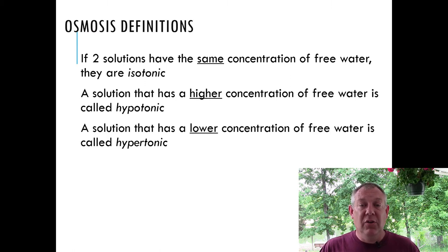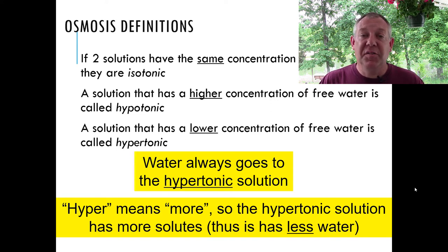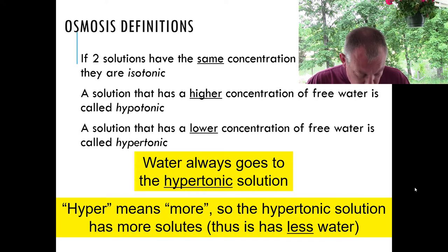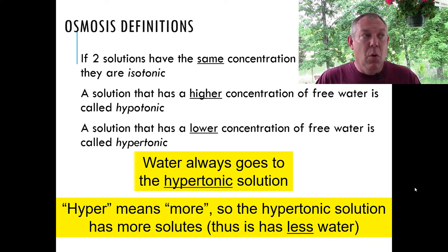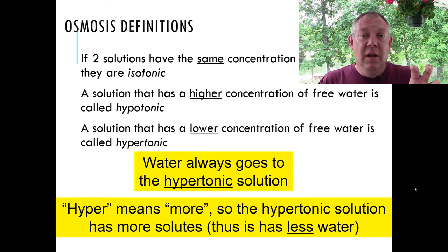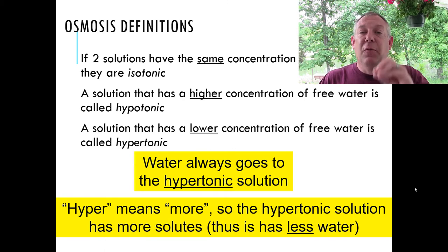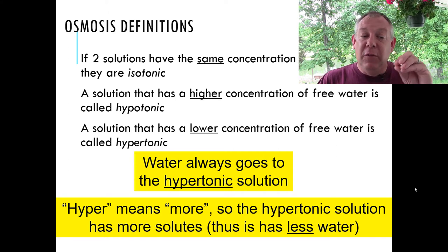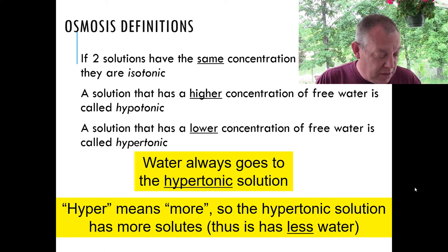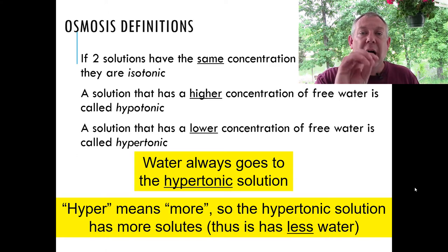A solution that has a lower concentration of free water is called hypertonic. Water will always move to the hypertonic solution. You've got to figure out some way to get these terms straight. Hyper always means more — if you're hyper, that's more activity. So a hypertonic solution has more solute, whether that's salt or urea or whatever's dissolved in the water. If there's more solute, that means there's less free water, so water is going to come from the other solution. Water will always diffuse to the hypertonic solution.